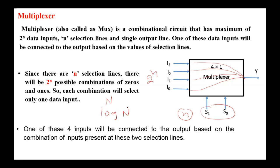For example, here we have a 4-to-1 multiplexer, so we need 2 select lines. If the select lines are 0,0 then I0 will be transferred to the output. If 0,1 then I1 will be transferred. If 1,0 then I2. And if the select lines are 1,1 then I3 is transferred to the output.